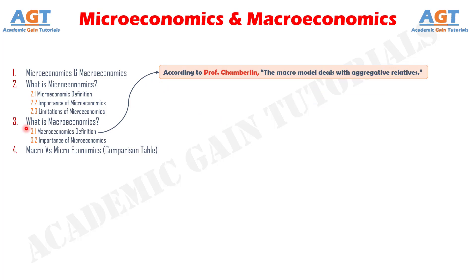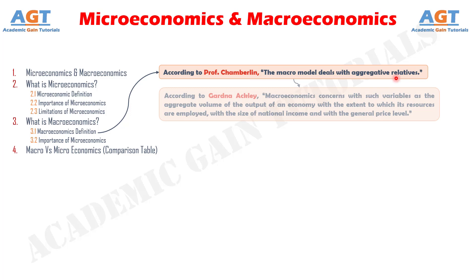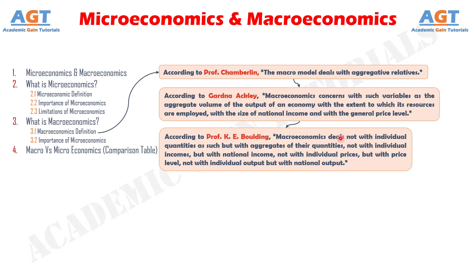Some of the notable and important definitions of macroeconomics are as follows. According to Professor Chamberlain, the macro model deals with aggregative relatives. According to Gardner-Ackley, macroeconomics concerns with such variables as the aggregate volume of the output of an economy, with the extent to which its resources are employed, with the size of national income and with the general price level. According to Professor Bling, macroeconomics deals not with individual quantities as such but with aggregates of their quantities — not with individual incomes but with national income, not with individual prices but with price level, not with individual output but with national output.